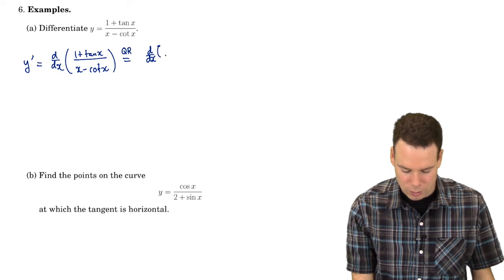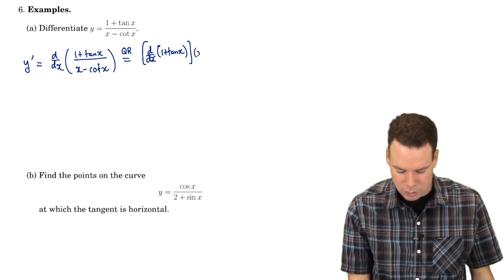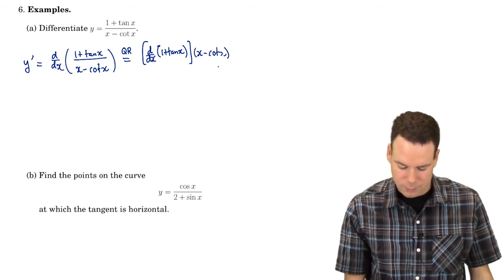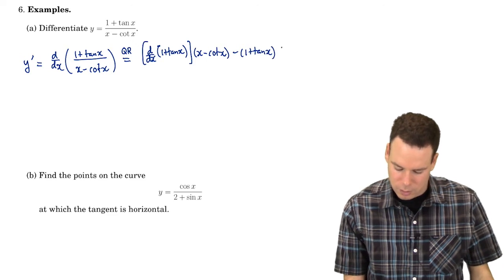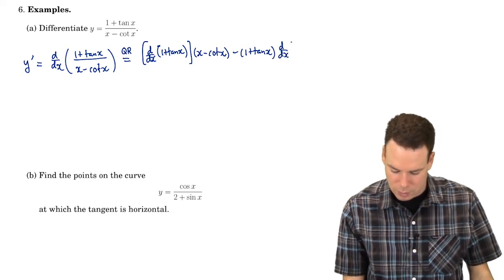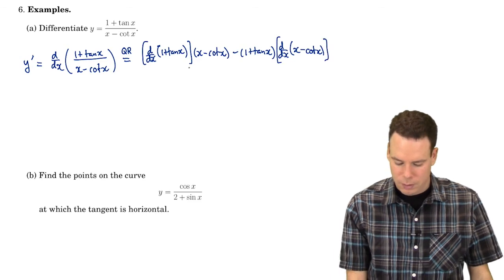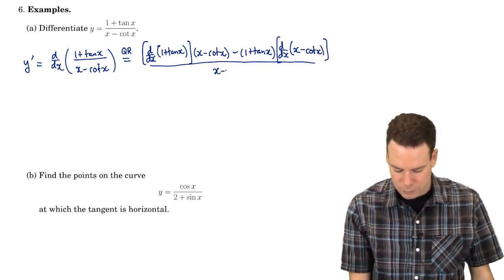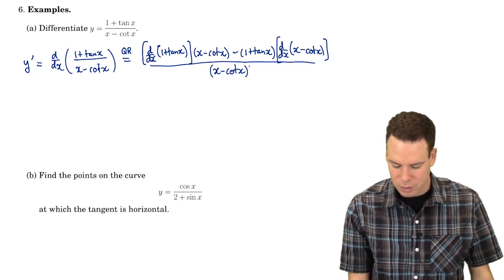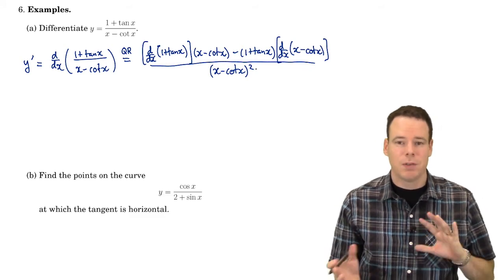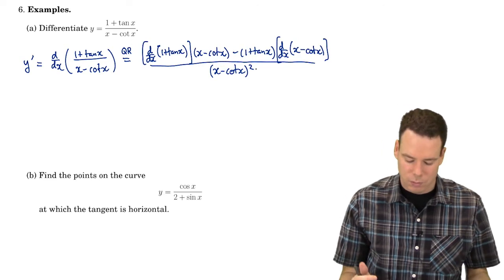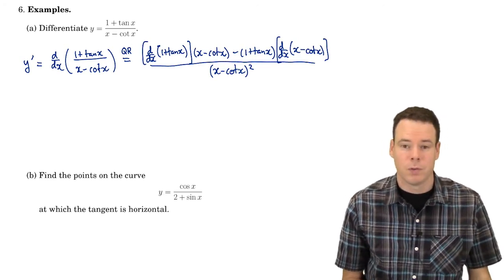The quotient rule tells me it's the derivative of the top function — so it's (1 plus tan of x) — multiplied by the bottom function, (x minus cotan of x), and then I take away from that the top function times the derivative of the bottom function, all over the bottom squared. I didn't do too much in this step. I just applied the quotient rule: derivative of the top times the bottom, minus the top times the derivative of the bottom, all over the bottom squared.